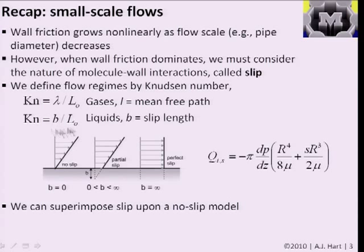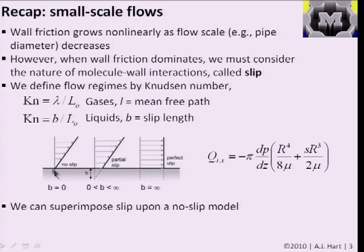The length scale we talked about most was the pipe diameter—comparing the distance gas molecules travel between collisions to the pipe diameter. For liquids, we defined the slip length as the distance b, where the velocity gradient extrapolated beneath the wall would reach zero. In the no-slip case, b equals zero. Typically we have some finite slip, and with perfect slip—no friction at all between wall and fluid molecules—you would have an infinite slip length.